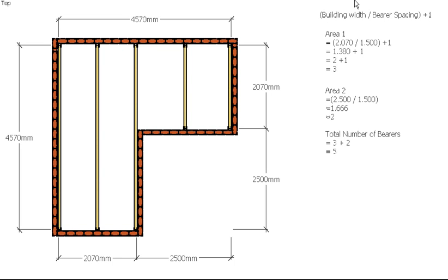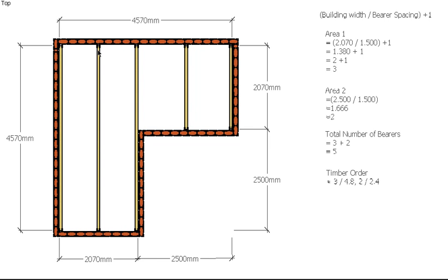As far as the timber order goes, I've got 3 bearers here which are going to be 4.57m long when finished, so we're going to have to order 4.8m lengths — so 3 × 4.8m in our order. And here I've got 2 bearers which are going to end up being 2.7m — you could technically get away with 2.1m lengths depending on the material you're using, but I'm going to err on the side of safety and order 2.4m lengths.